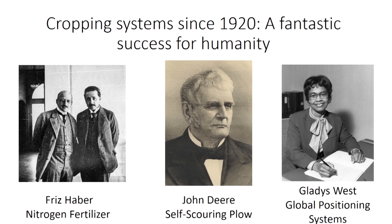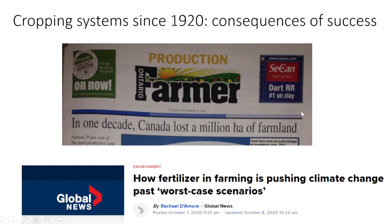You also have scientists like Gladys West, who is less well-known because she worked for the government — actually for the military — helping to develop global positioning systems. There are obviously military implications for GPS, but also agricultural implications: things like auto steer and variable rate prescription mapping. So you have scientific innovation and you have farmers adopting those innovations. A lot of the time they're helping to develop them. This confluence of farmers adopting technologies and people inventing technology is why we have such a productive agricultural system.